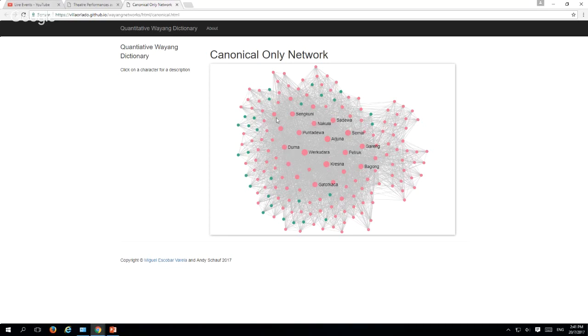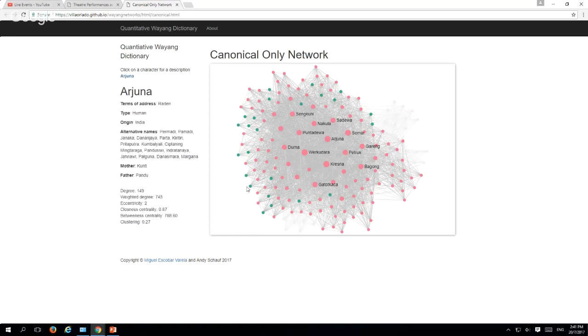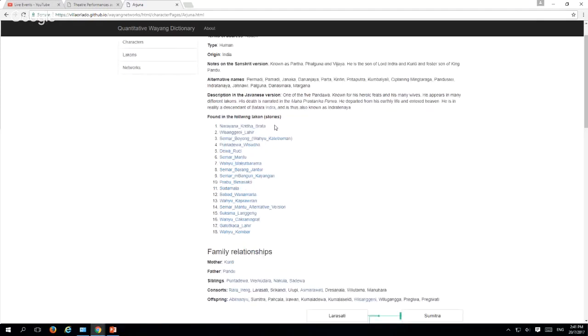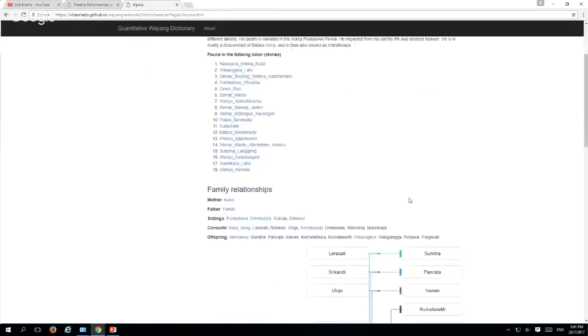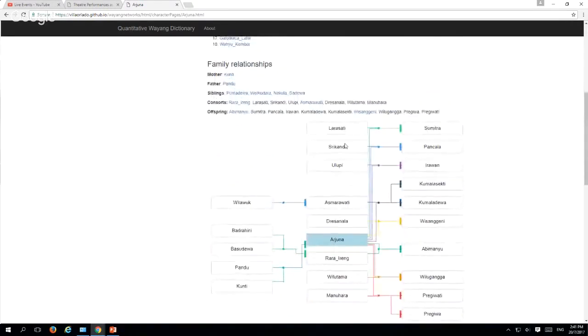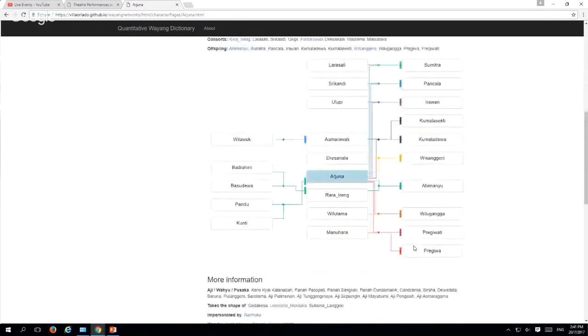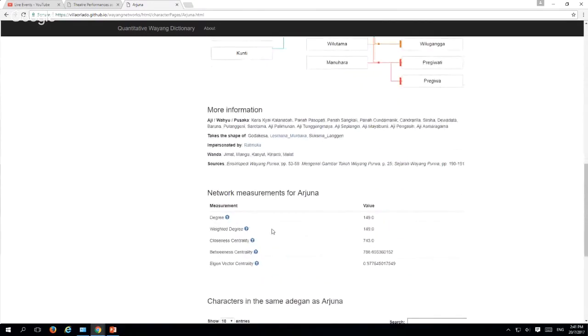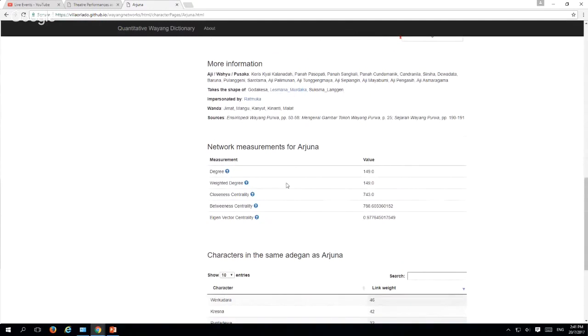And then, here also, if you click on any of these characters, I'm trying to see one that is a good example. If you click on any one of these characters, you get to see different information, some of it quantitative, some of it which is just basic information about these characters, like the stories where they're found, descriptions, origin, family relations. This is generated automatically and network measurements. So here you have certain things, you know, degree, weighted degree, and you have explanations also about what these things mean.